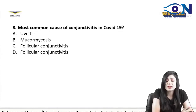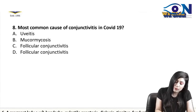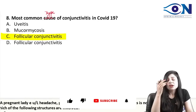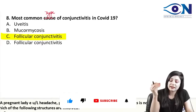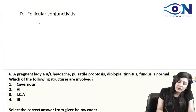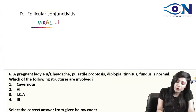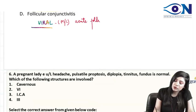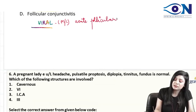A simple question: what is the most common type of conjunctivitis in COVID-19? It is acute follicular conjunctivitis. COVID-19 is caused by a coronavirus, and for viral conjunctivitis, always remember that the most common type is acute follicular conjunctivitis.